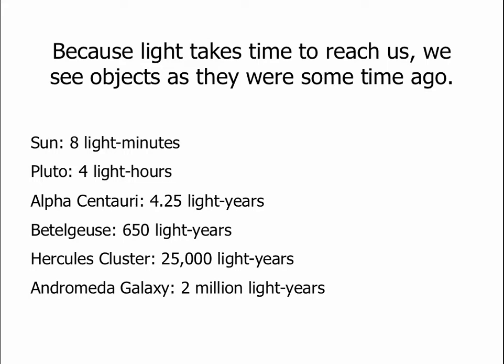The nearest big galaxy to us, the Andromeda galaxy, is 2 million light years away. So the light we see, if you were to go out and look at it tonight, would be light that left 2 million years ago before modern humans had come about on the Earth.